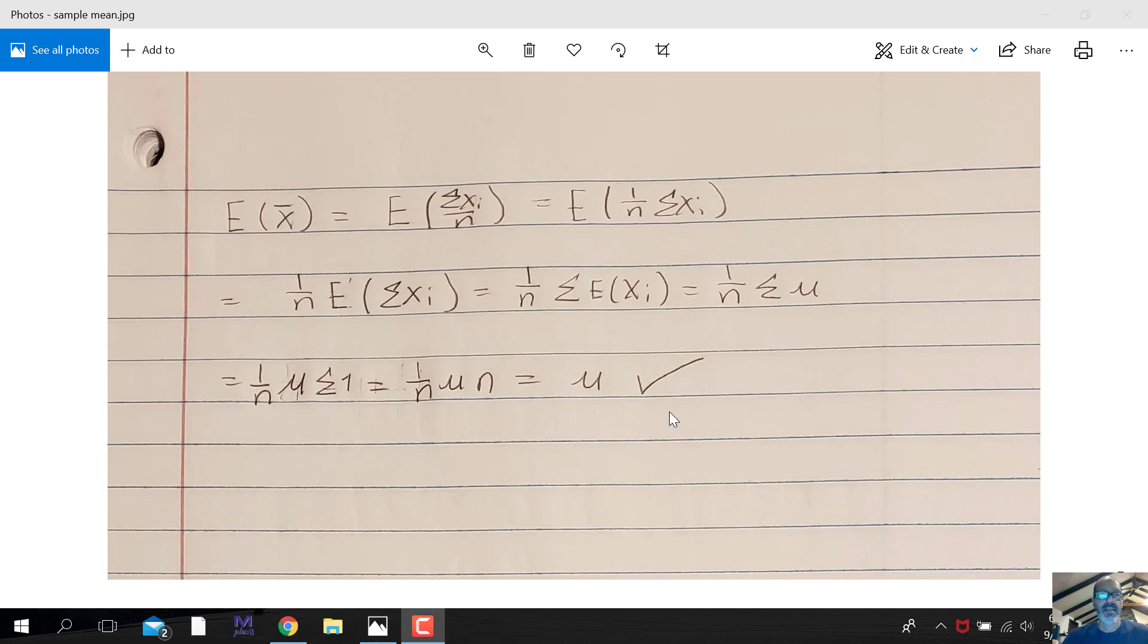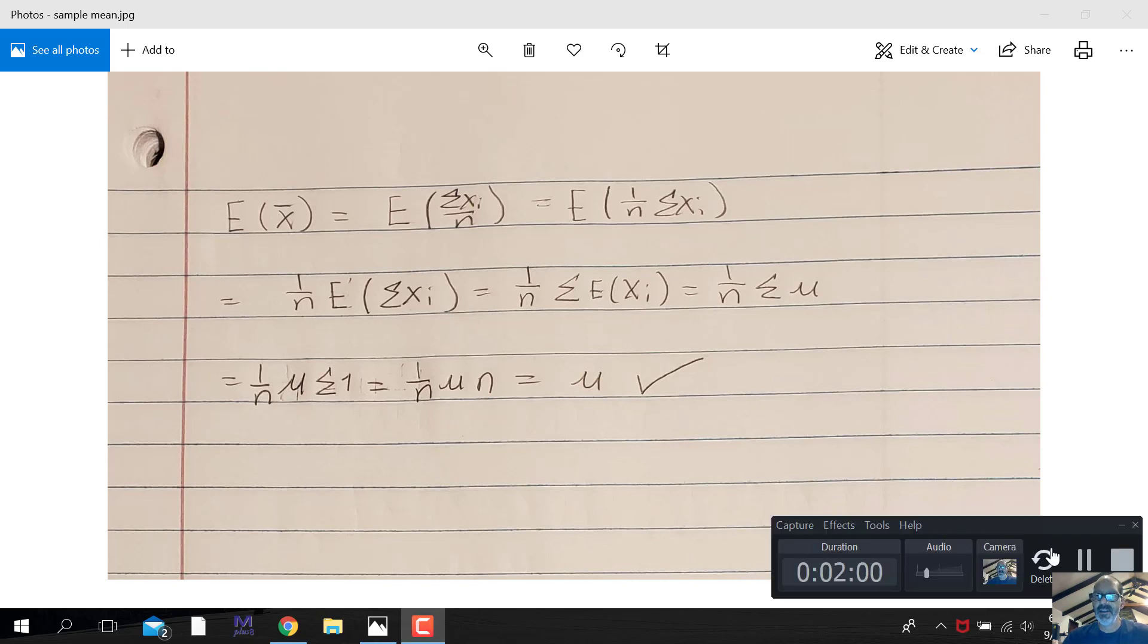So that's the proof that the sample mean is indeed an unbiased estimate of the population mean. Thank you.